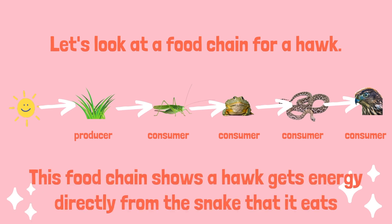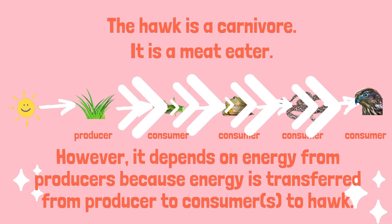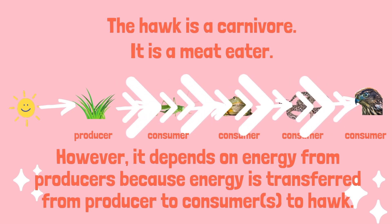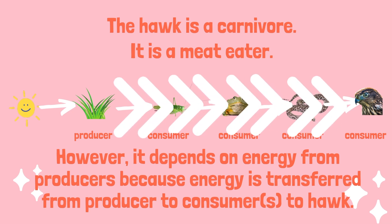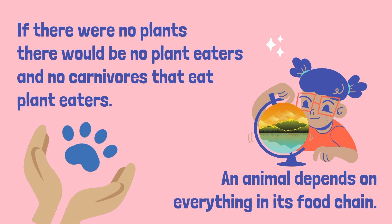This food chain shows a hawk gets energy directly from the snake that it eats, but it also gets energy from what the snake ate and the rest of the food chain, all the way back to the grass. Just because a hawk is a carnivore doesn't mean that it doesn't get energy from a producer. It depends on the energy from producers because energy is transferred from producer through the consumers to the hawk. That means if there were no plants, there would be no plant eaters and no carnivores that eat the plant eaters. An animal depends on everything in its food chain.